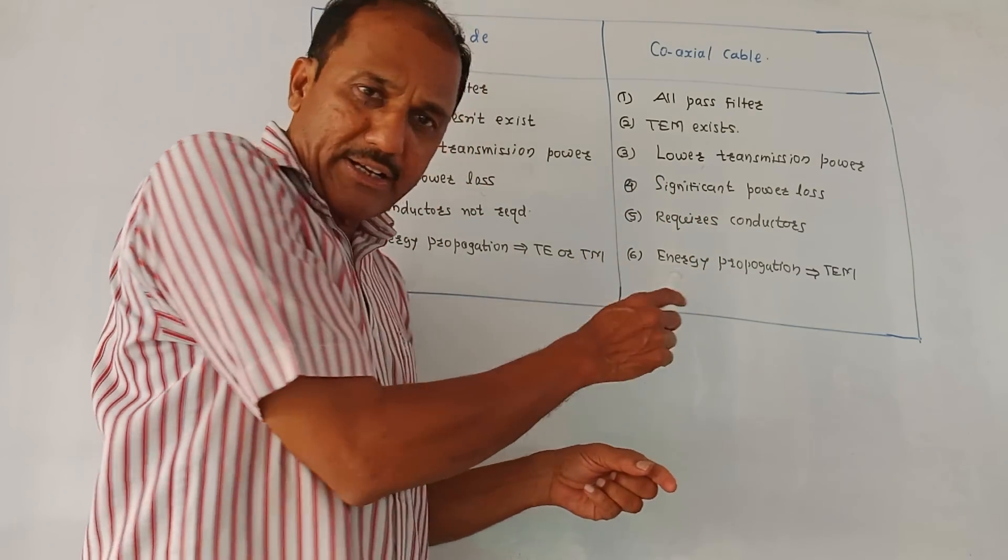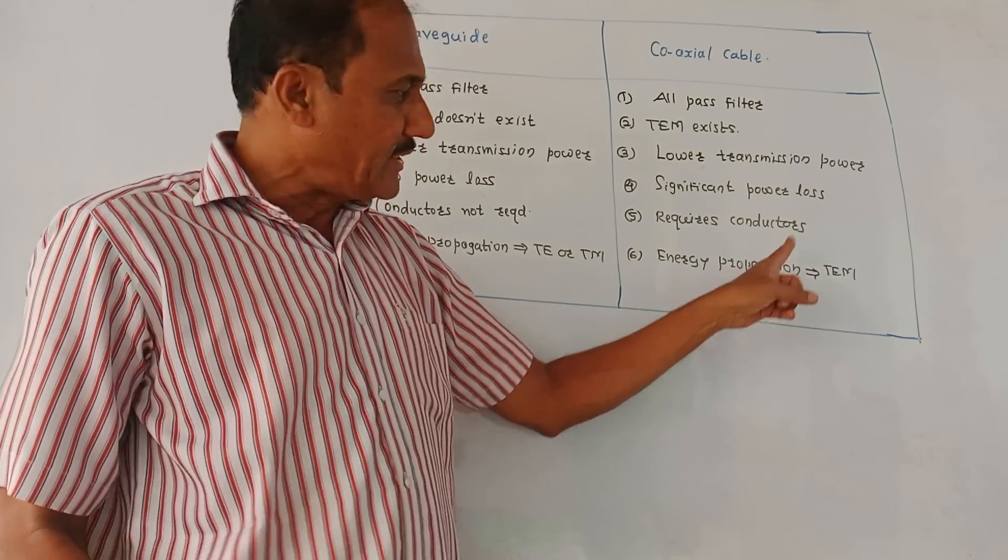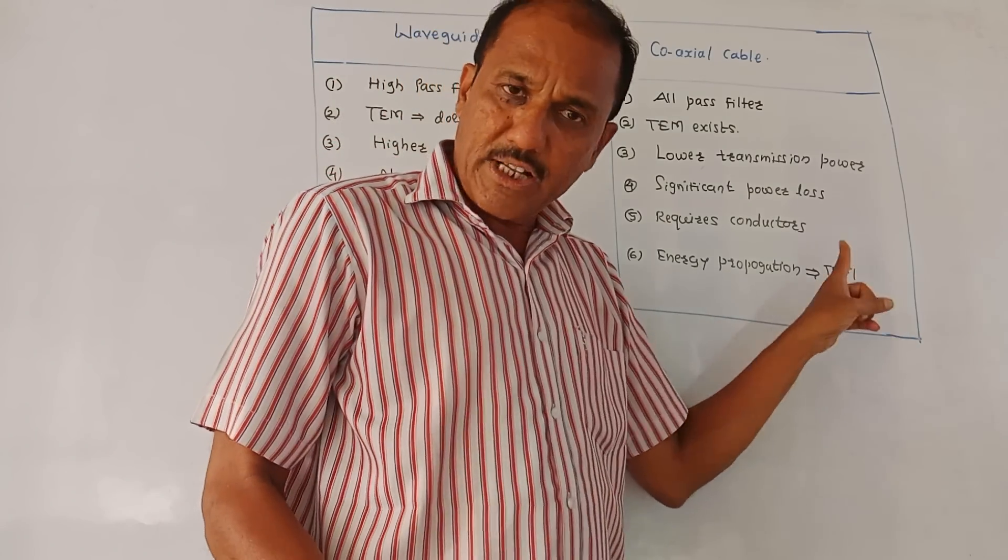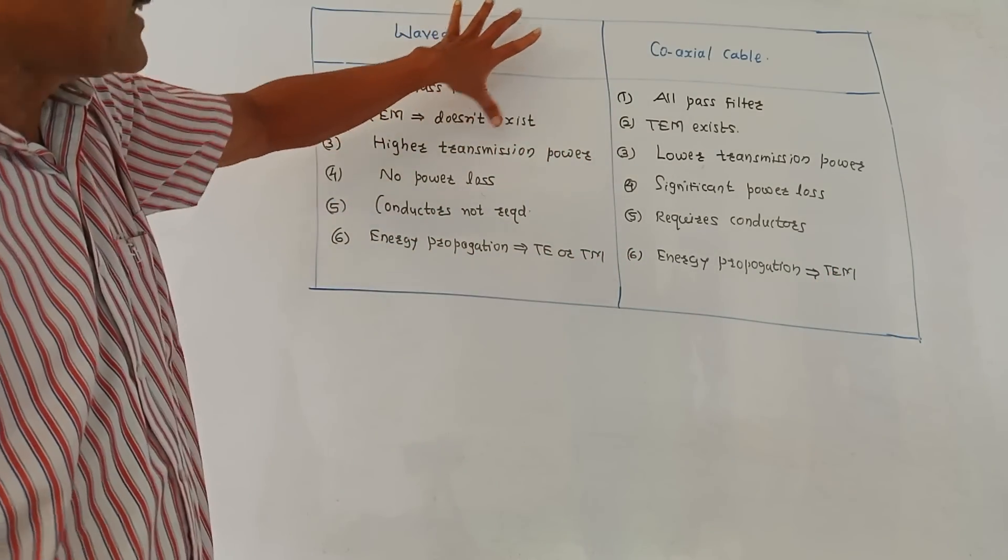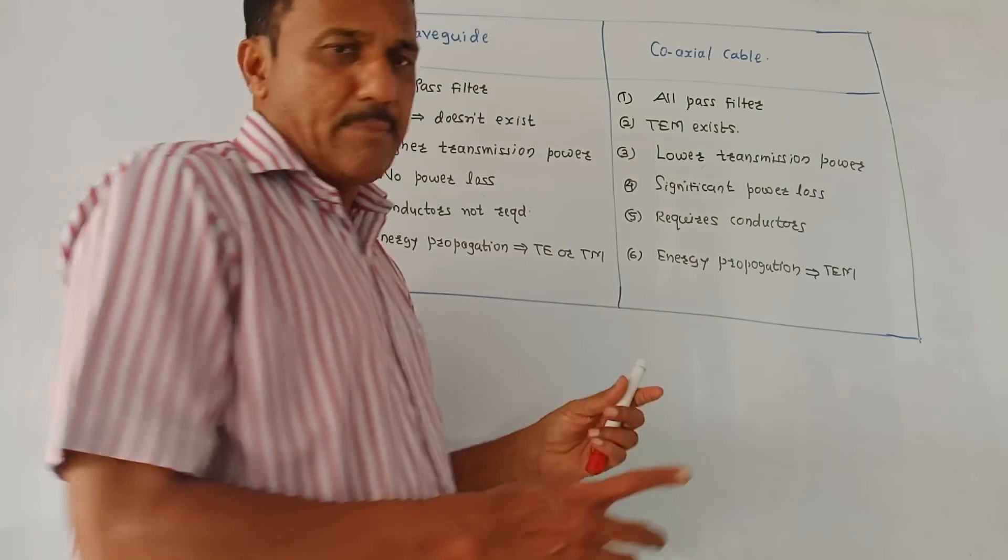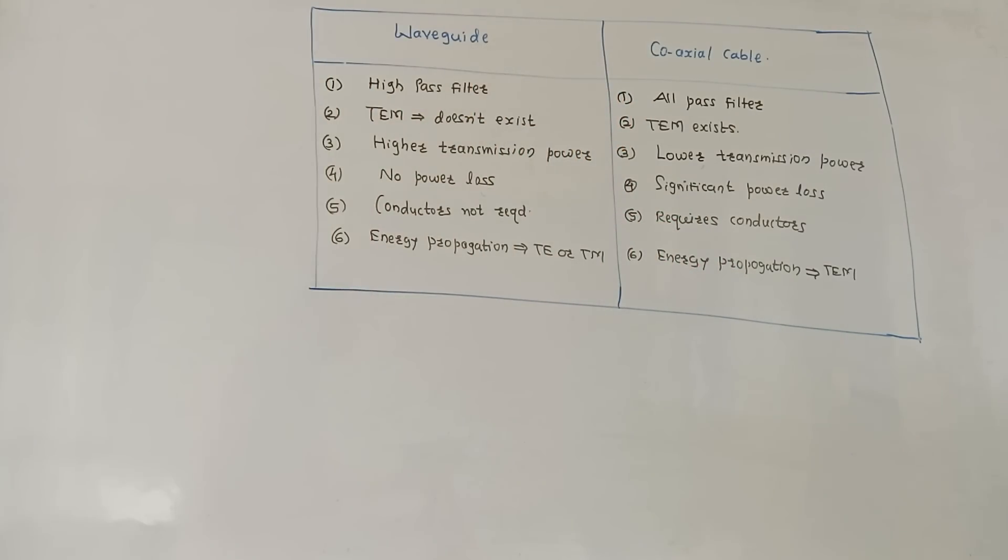Then, last point is, energy propagation in case of waveguide takes place with the help of TE, that is transverse electric or TM, that is transverse magnetic wave, whereas in case of coaxial cable, energy propagation takes place with the help of TEM, transverse electromagnetic wave. So, this is the comparative analysis of waveguide and coaxial cables. So, dear students, that's it for today's session. Thank you. Thanks a lot for watching this video.